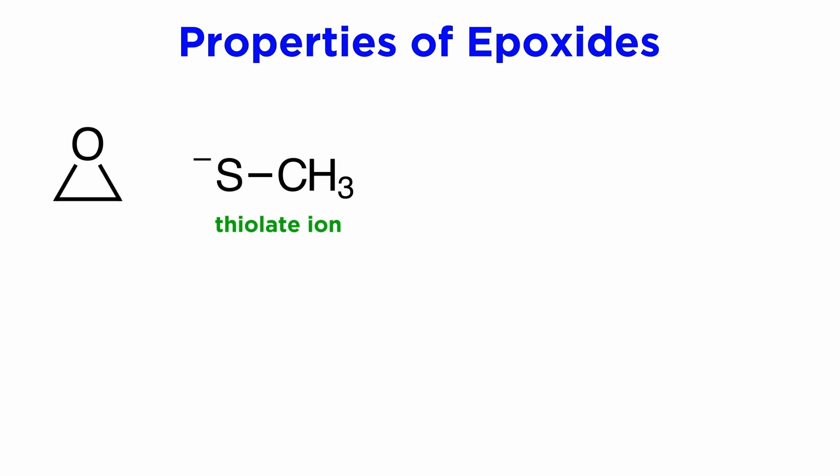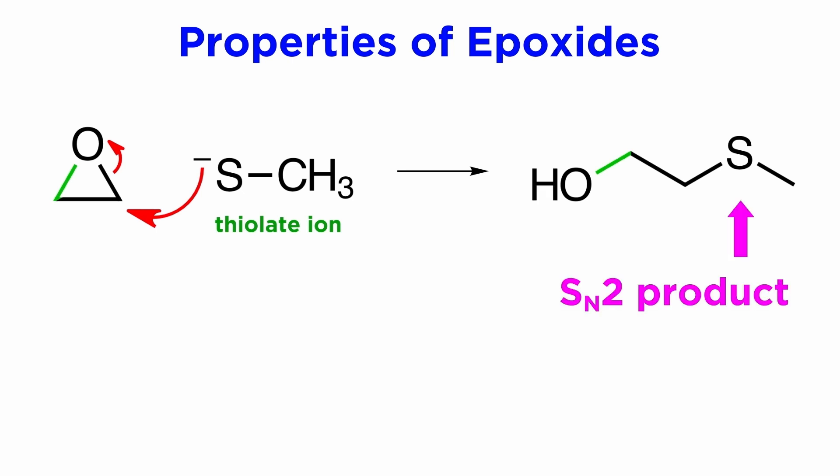Here we can see a typical SN2 nucleophile, like a thiolate ion, attacking one of these carbons. This carbon-oxygen bond will break, and the oxygen will remain tethered to the molecule because of this other carbon-oxygen bond. It can then pick up a proton from solution, and we end up with this SN2 product.